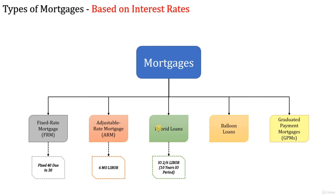Balloon mortgages offer an initial fixed interest rate for five to seven years and then require a balloon payment. The bank provides a lower interest rate in the initial years and later expects a large payment from the borrower. The balloon payment is the final payment of the loan that pays off the entire balance. If you expect your income to increase significantly after ten years, this balloon loan allows you to pay less interest in the beginning and pay off the entire loan amount at one shot later.